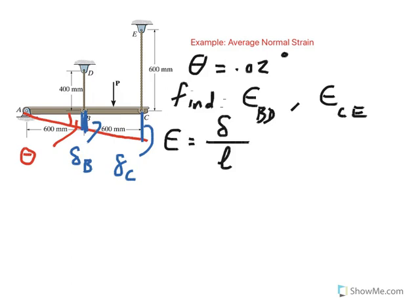Okay, so if I find delta B, all I have to do is to take that delta B and divide by the length of BD, which is 400, and similarly for delta C, divided by 600, which is the initial length of C.